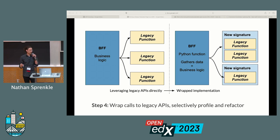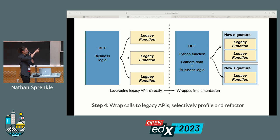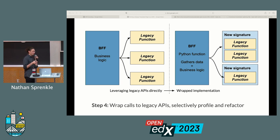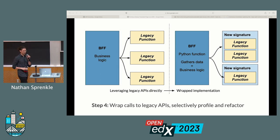The final step was applying some selected refactors. Anywhere where we were calling an old API, we wrapped them in signatures we owned, to allow us, while we were profiling code, to refactor and change details that no longer served us. For example, we found that one single function was 60% of our page load time, and we found we didn't need it anymore. So just for a small piece of the back-end logic, we could change how it worked and dramatically speed up our new experience.